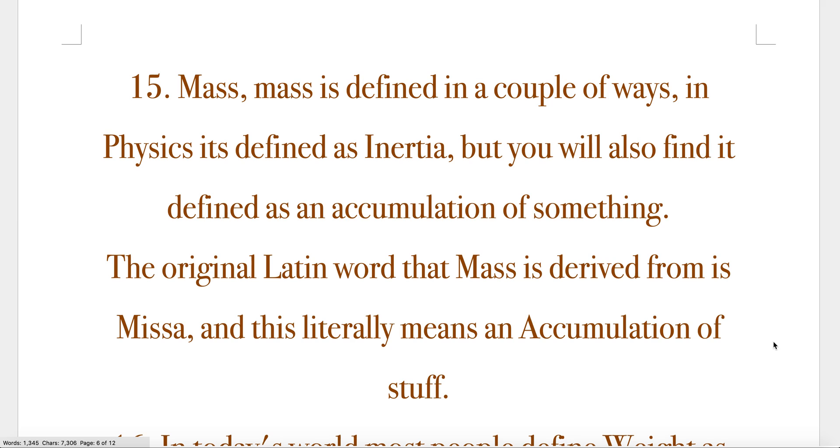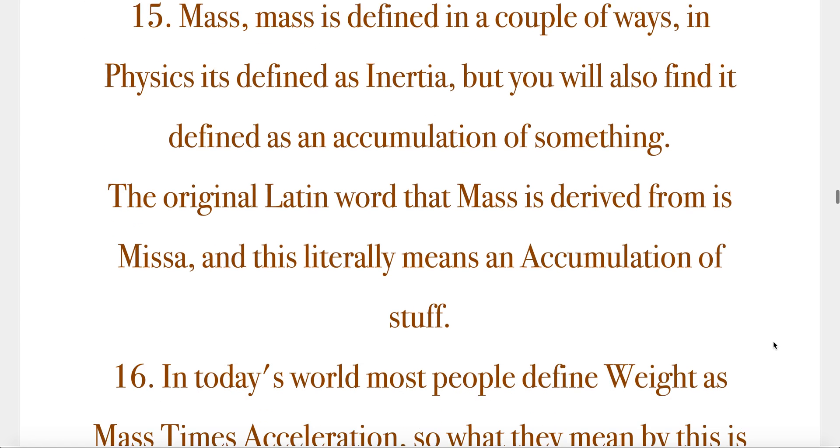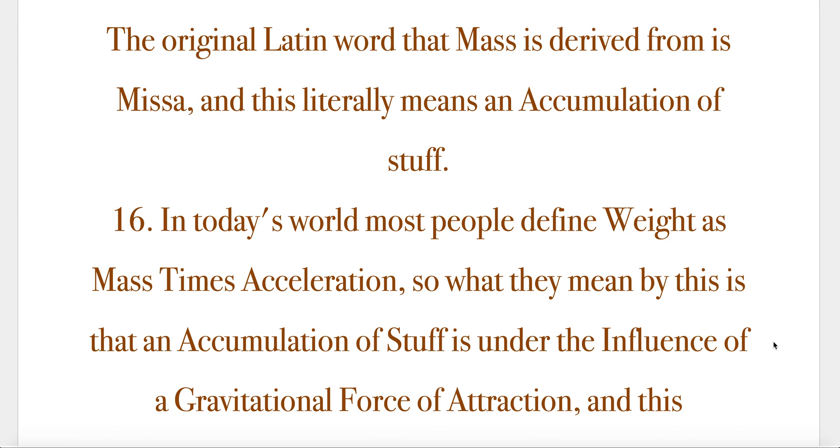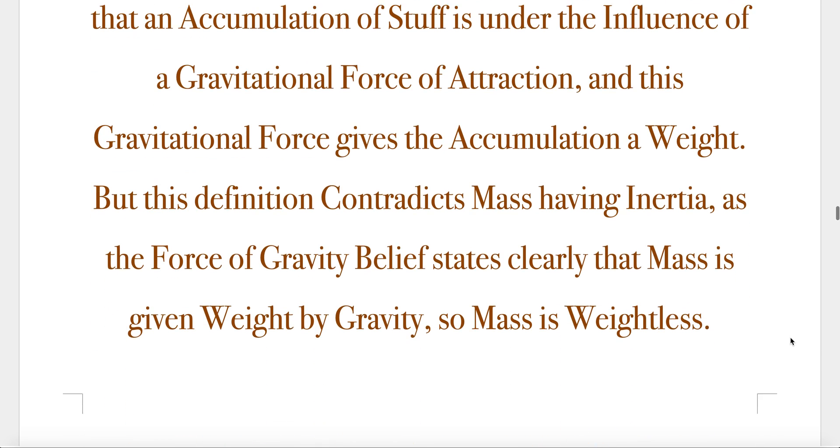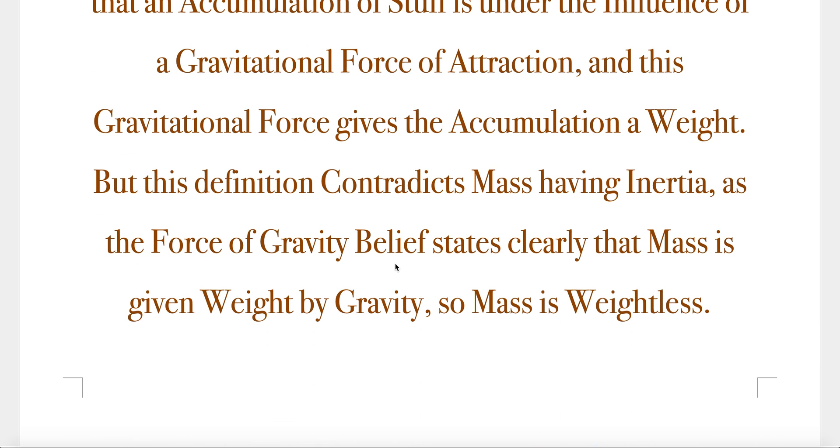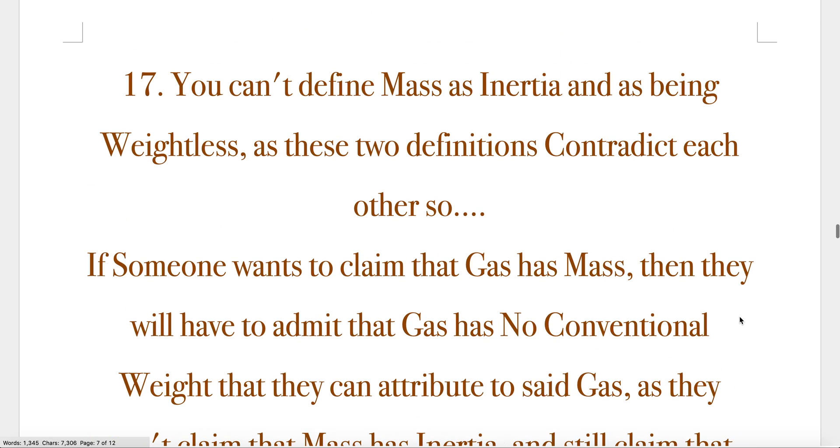Mass. Mass is defined in a couple of ways. In physics, it's defined as inertia, but you will also find it defined as an accumulation of something. The original Latin word that mass is derived from is missa, and this literally means an accumulation of stuff. In today's world, most people define weight as mass times acceleration. So what they mean by this is that an accumulation of stuff is under the influence of a gravitational force of attraction, and this gravitational force gives the accumulation a weight. But this definition contradicts mass having inertia, as the force of gravity belief states clearly that mass is given weight by gravity, so mass is weightless. You can't define mass as inertia and as being weightless, as these two definitions contradict each other.